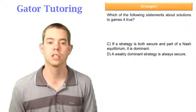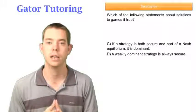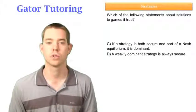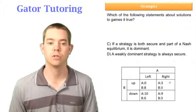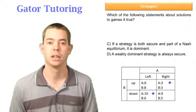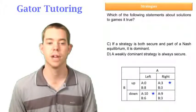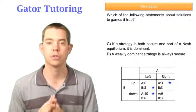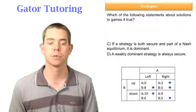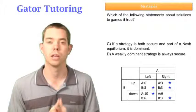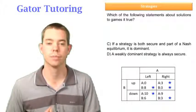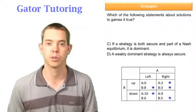Option C says if a strategy is both secure and part of a Nash Equilibrium, it is dominant. Let's draw a game to organize our thoughts. For A: if B chooses up, A prefers 3 over 0; if B chooses down, A prefers 10 over 9. For B: if A chooses left, B prefers 8 over 6; if A chooses right, B is indifferent between 3 and 3, so we star both. The Nash Equilibrium is where B plays up and A plays right — two stars in one box.